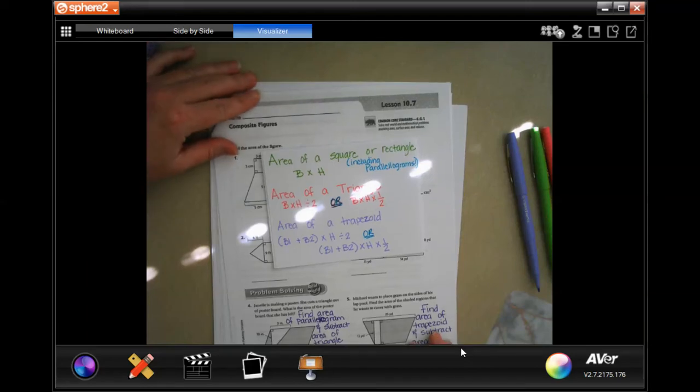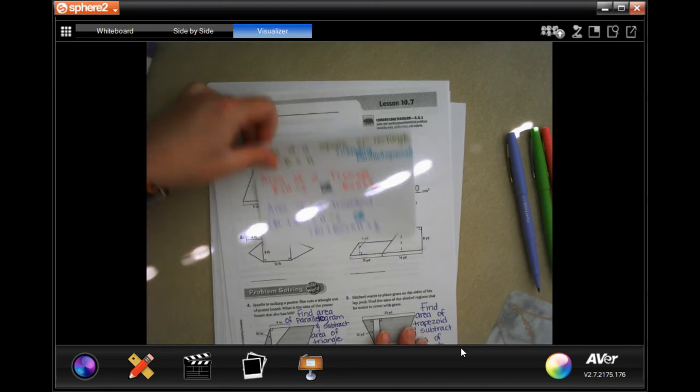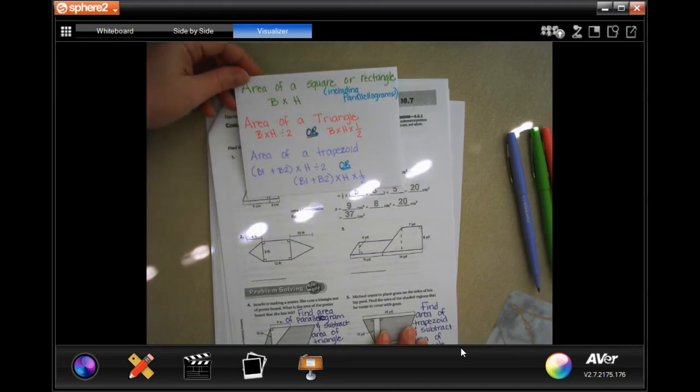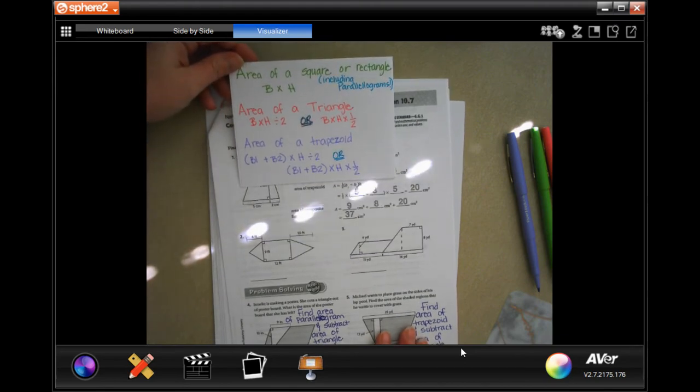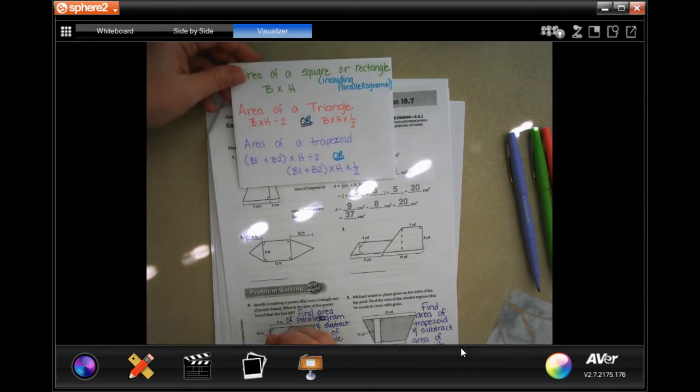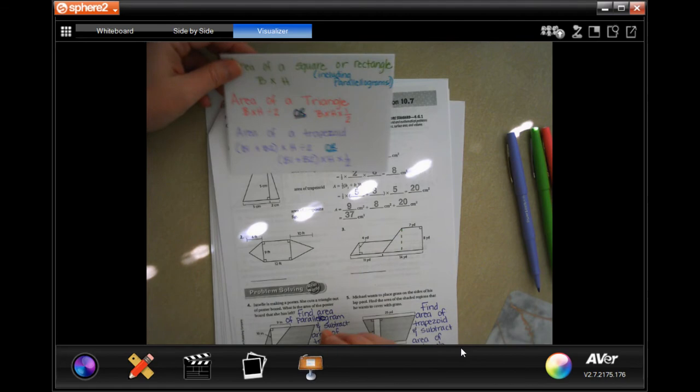Welcome to sixth grade chapter 10 lesson 7. We're going to get started. Go ahead and write this down, take a picture, do whatever you have to do with the areas of each of the things that we're going to be working with.